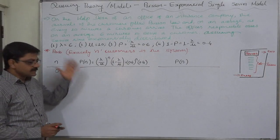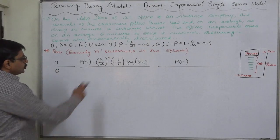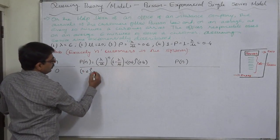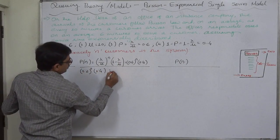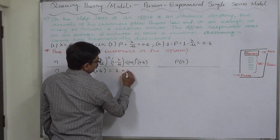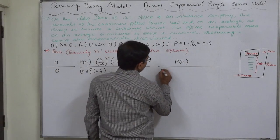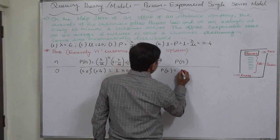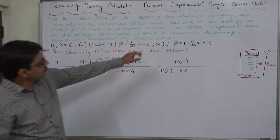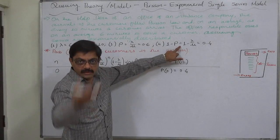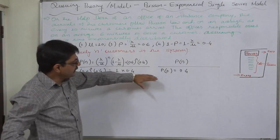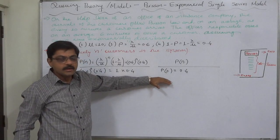What happens when n is 0? In this case, λ/μ is 0.6 and (1 - λ/μ) is 0.4. So we get 0.6 raised to 0, which is 1, multiplied by 0.4 — giving a probability of 0.4. This means the probability of no customer in the system is 0.4, which we already calculated in the previous lecture as the idle rate.